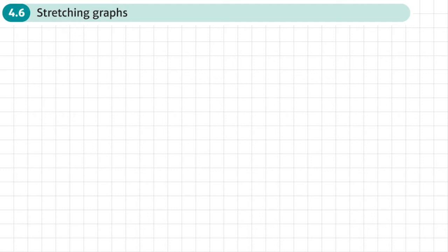This is the sixth section of chapter 4 on graphs and transformations, and this section is about stretching graphs. There are two types of stretch or squash that we need to know about, and also two special cases.